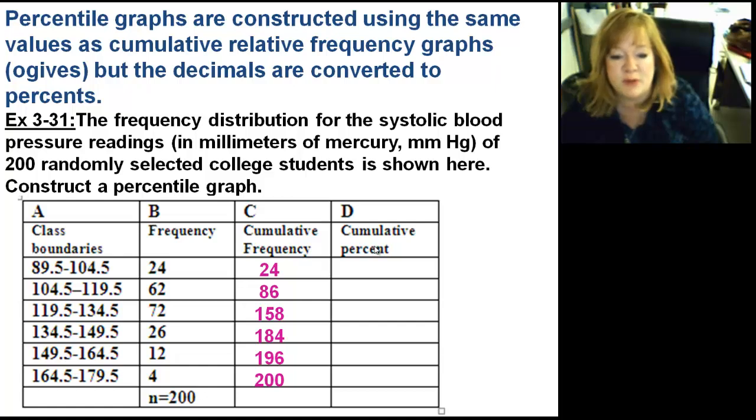To find the percent, I'm going to take 24 and divide by 200. So 24 over 200. So that's .12, which is 12%. Then 86 divided by 200 is .43, which is 43%, and so on. So you fill out your chart, and then you graph them, just like you did with the ogives. And what I want you to do is that's something I'm going to have you do on your own. And we're just going to end the notes there. That's enough to get us going, and I will see you tomorrow.